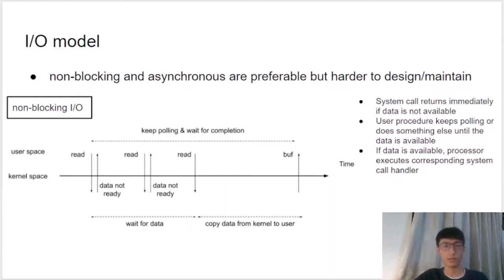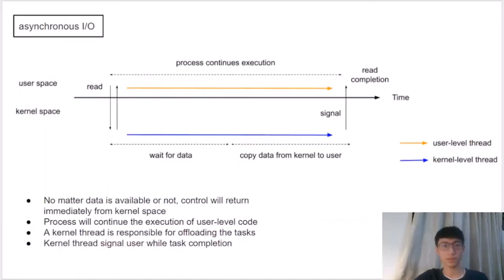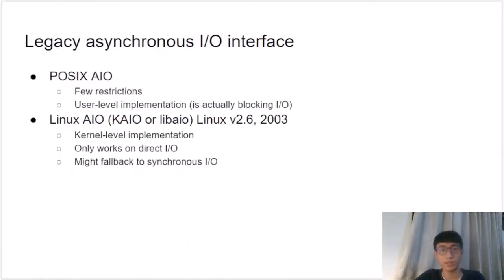In the non-blocking I/O model, the system can return immediately if data is not available. The user process then keeps polling or does something else until the data is available, at which point it traps into the kernel and executes the corresponding system call handler. In the asynchronous I/O model, no matter whether data is available or not, control returns immediately from kernel space. The process continues executing user-level code, while a kernel thread is responsible for offloading the task. After task completion, the kernel thread signals the user process.